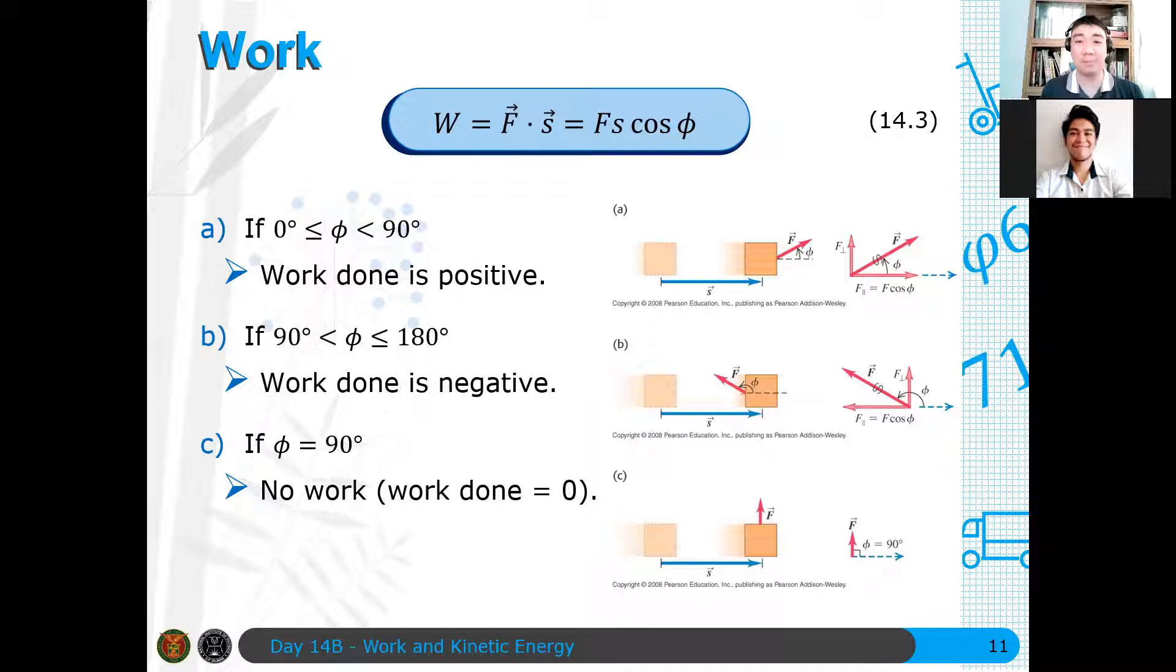And if φ is equal to 90 degrees, then since F and S are perpendicular to each other, then we see that the work done is now equal to zero. There's no work done on the particle. So that's why when you carry an object from one place to another, you're not doing any work. Questions? Are there any questions in this topic?